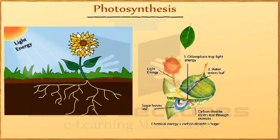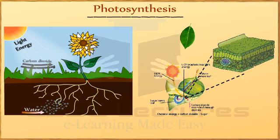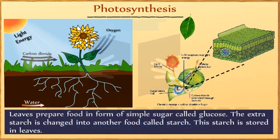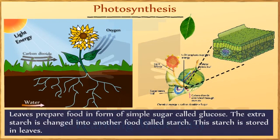Chloroplasts trap the light energy which splits the water molecules. Then water and carbon dioxide combine to form glucose. Leaves prepare food in the form of simple sugar called glucose.